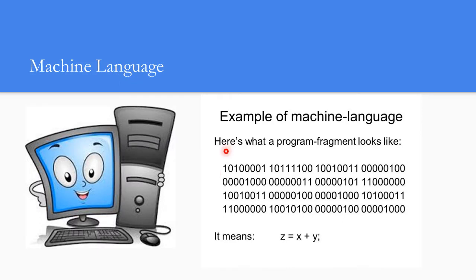We are all aware about the history of a computer. Initially, everything had to be fed to the computer in the form of bits — zeros and ones — because the computer can understand only machine language, that is binary language. If you want to perform a single operation like Z = X + Y, each part must be decoded into its equivalent machine form and fed directly to the machine.